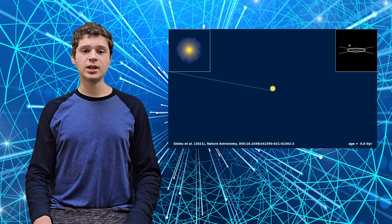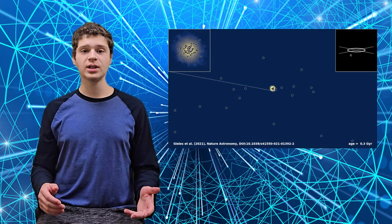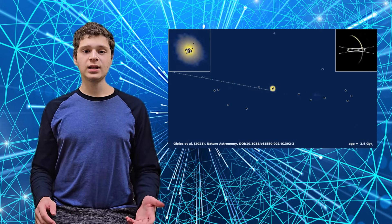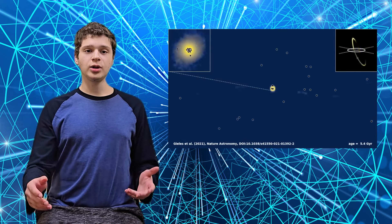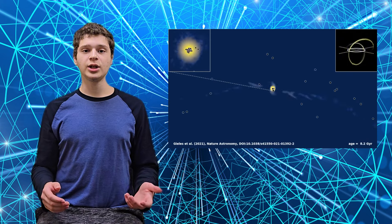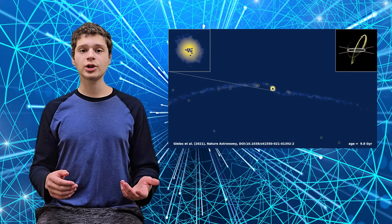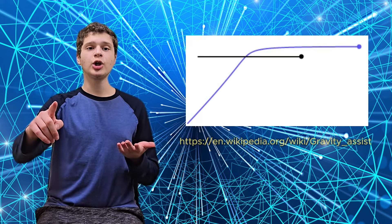To investigate, Gilles and his team ran detailed N-body simulations to recreate the orbits and evolution of the cluster's stars. Knowing that black holes might exist in globular clusters and can cause stars to be ejected, they included black holes in some of their simulations. Their results suggested that a population of stellar-mass black holes inside Palomar 5 could explain its current structure. Interactions with these black holes likely slingshotted stars out of the cluster, creating the tidal stream.